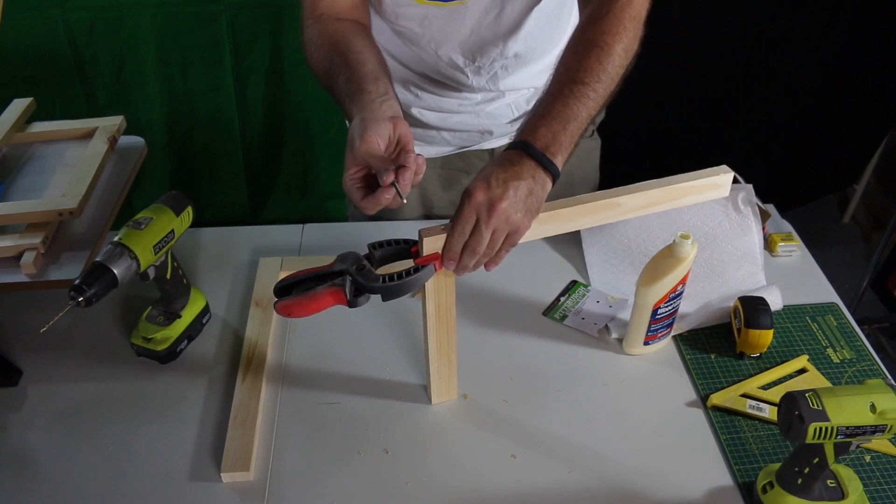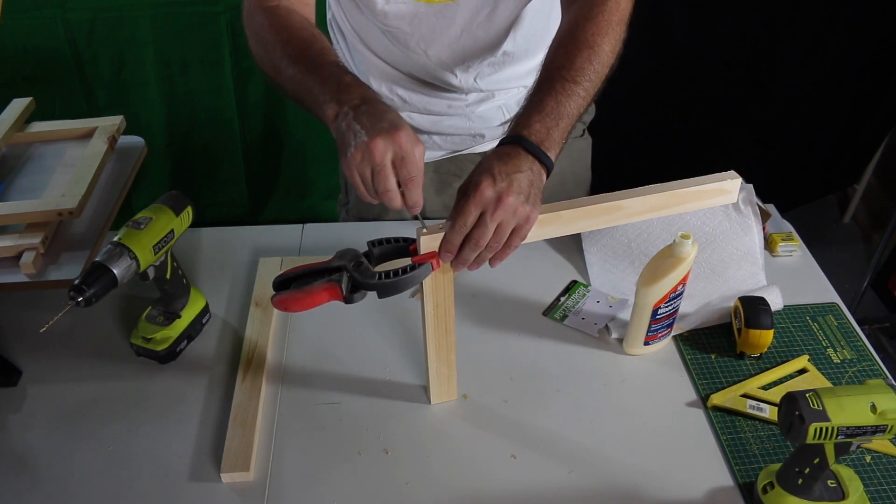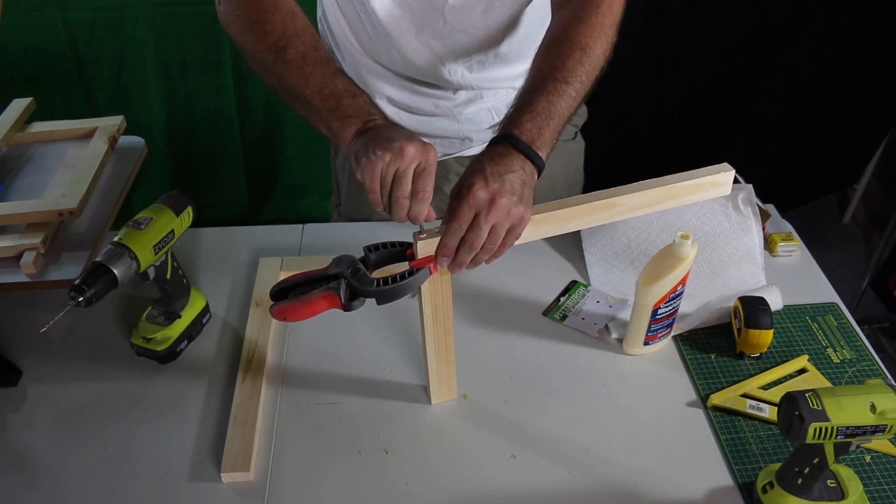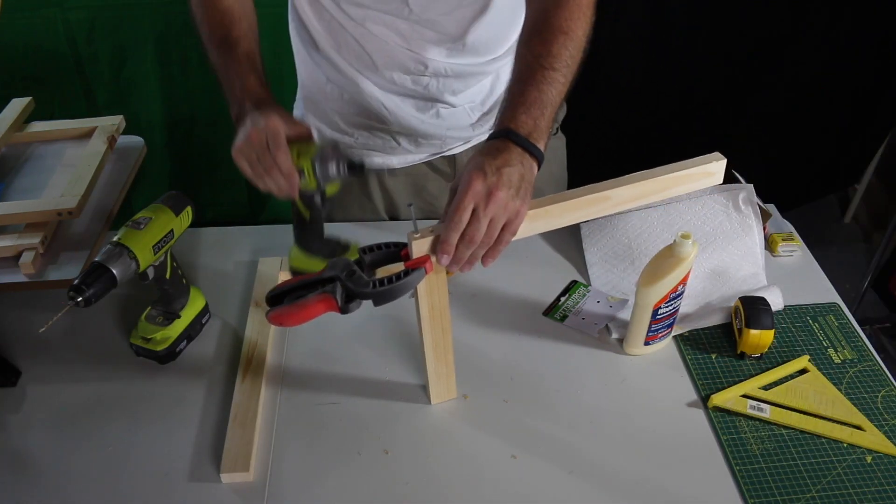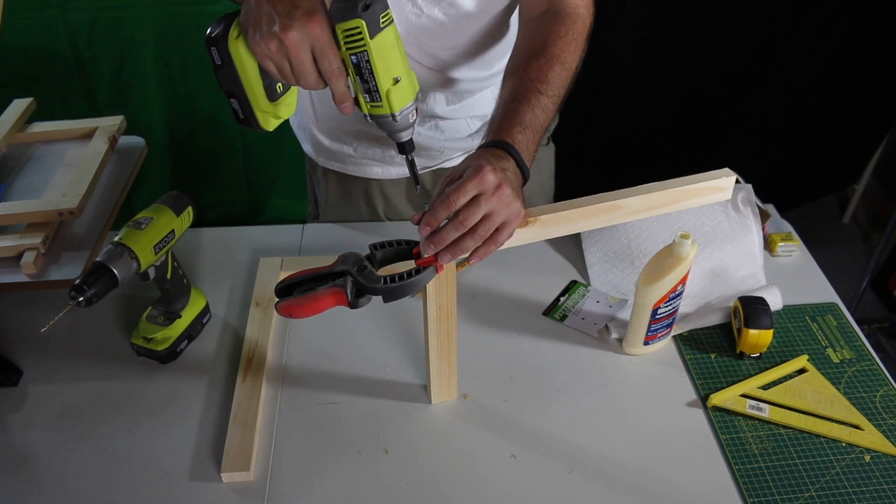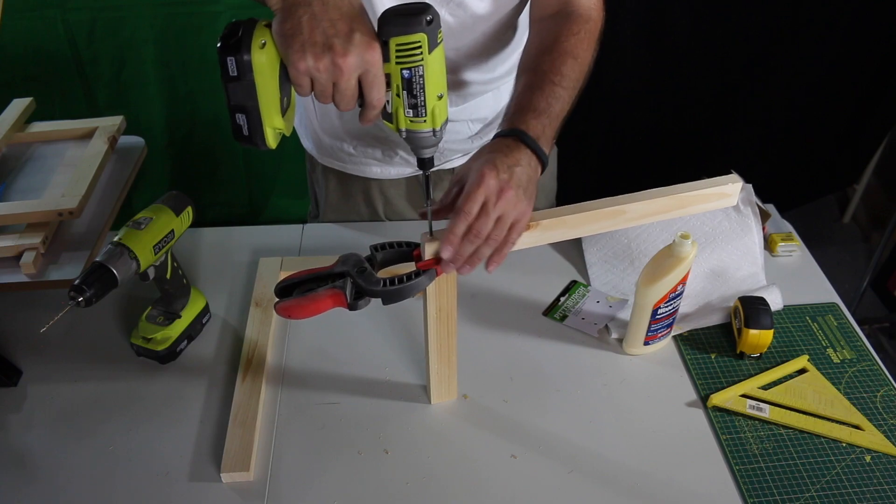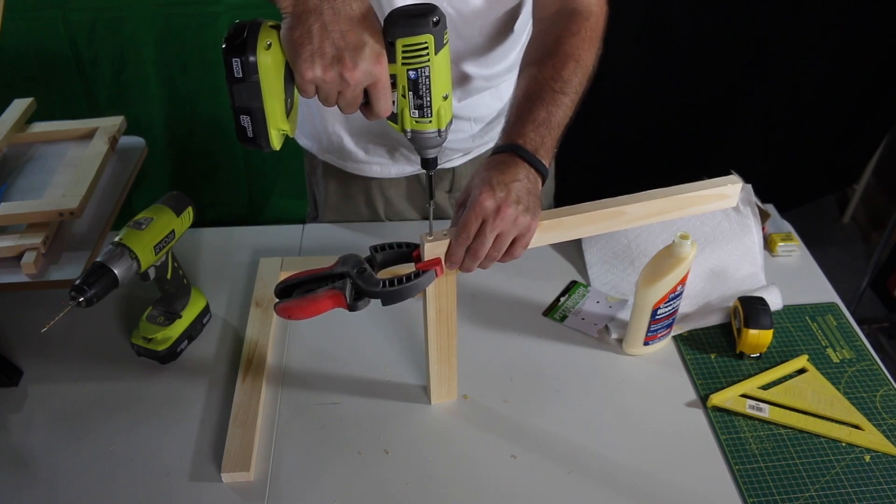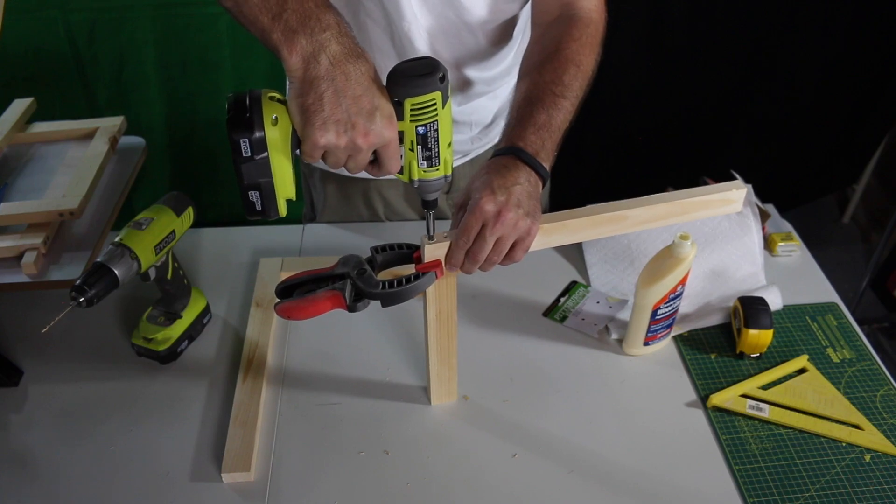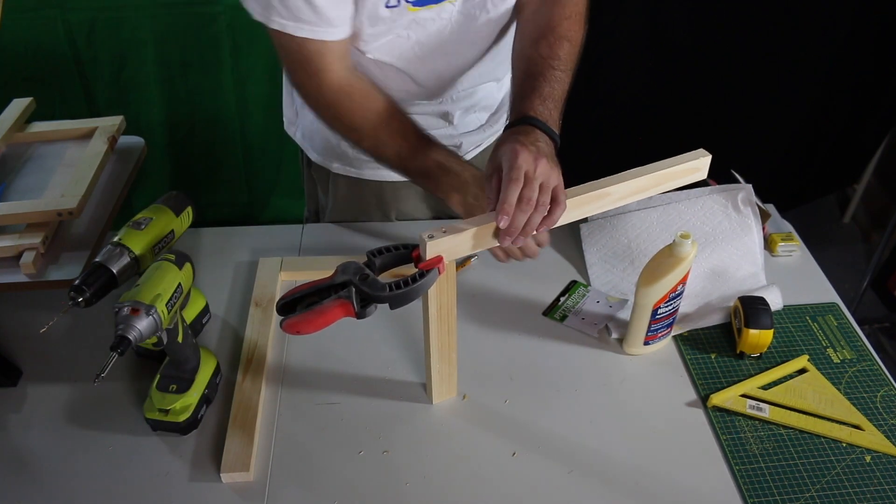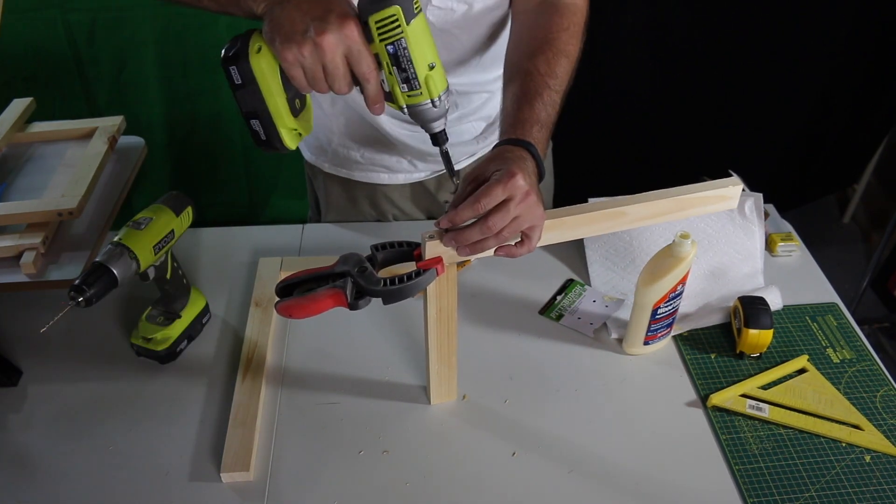And then come in with the screws. I also like to put a little bit of wood glue on the screws itself and then screw them in. Then just repeat this for all the sides until your frame is intact.